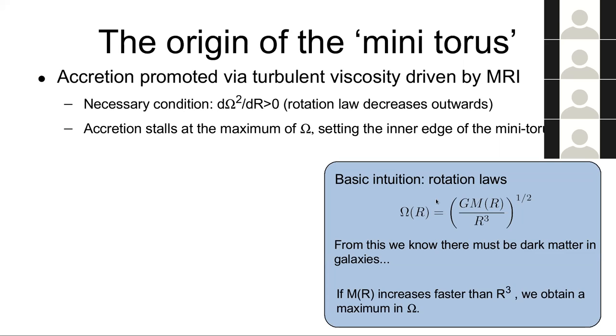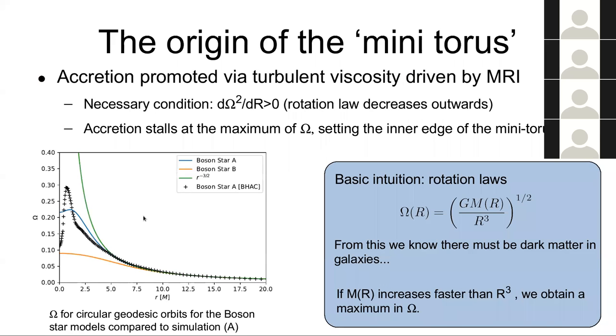Leading to a stalling of the accretion at the maximum of Omega. So I can understand that somewhat. So the basic intuition of this rotation law is if you have a black hole or some kind of massive objects, and of course, your Keplerian velocity goes as r to the minus three half. If you have some mass that increases with radius, for example, as it's needed for understanding rotation curves from galaxies, the Omega profile can be different. And if it's steeper than r to the minus three, actually, you can have a maximum in Omega.